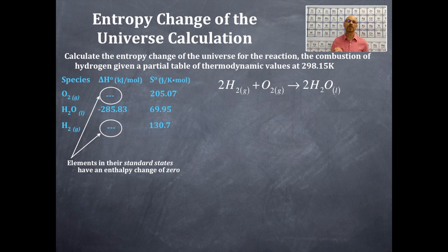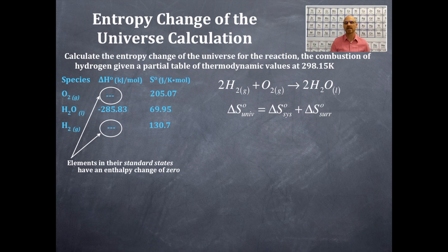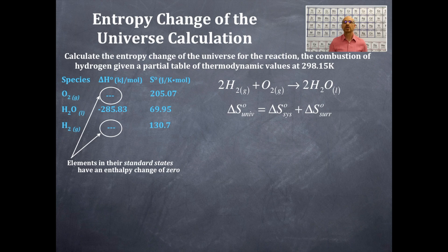The equation for the entropy of the universe calculation is: delta S-naught universe equals delta S-naught system plus delta S-naught surroundings. We've done delta S-naught for the system in previous videos, but not the surroundings. We're going to do both calculations here and sum them up, making sure the units are the same.